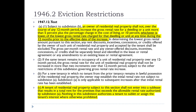Under Civil Code 1947.12, an owner of residential real property shall not, over the course of any 12-month period, increase the gross rental rate of any dwelling or unit more than 5% plus the change in cost of living — the CPI index. You can increase the rent 5% plus the change in CPI, or 10%, whichever is lower.